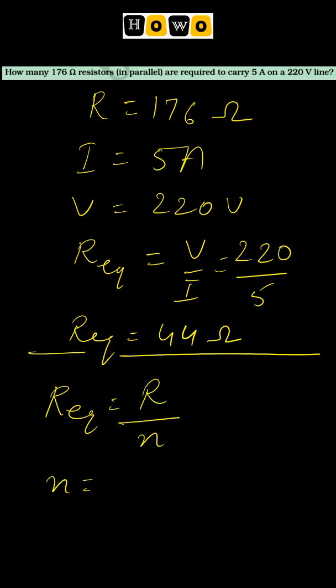So n we can calculate easily using R. R is 176 and R equivalent on cross multiplying will come up here. So here we are getting 176 upon 44, and on dividing 176 by 44 we are getting 4.